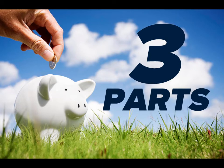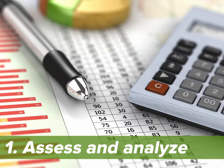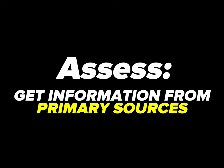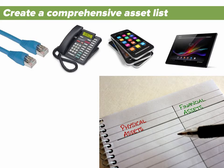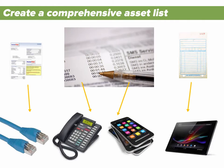A proper telecom expense management system has three key parts, starting with the part where you assess and analyze the current state of your telecom setup. By assess, we mean going through the process of gathering information from primary sources — the places that have the definitive information required to take a proper snapshot of your current telecom state. This means directly accessing information about your telecom plans and services from the carriers you use, looking at past billing, and generating a comprehensive list of assets. That asset list is an important one, because every item on every bill should be traceable back to an actual telecom asset.